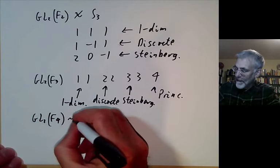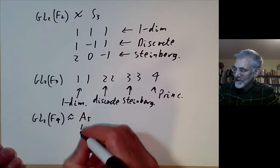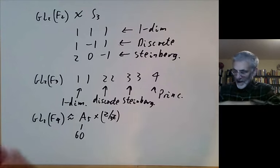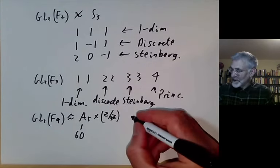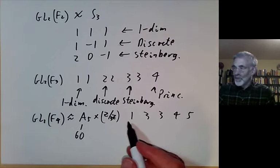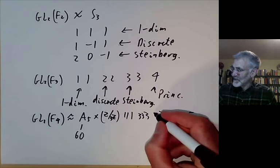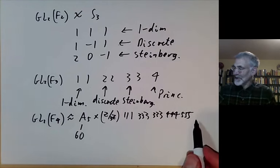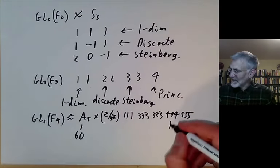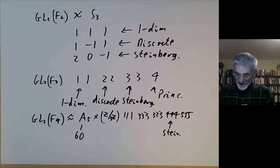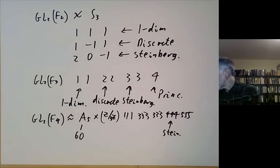For GL2(F₄): SL2(F₄) is isomorphic to A₅ of order 60, but GL2 means you also multiply by ℤ/3ℤ. So you take the representations of A₅ — dimensions 1, 3, 3, 4, 5 — and multiply all of them by three, giving three copies of each. The dimensions of GL2(F₄) representations are thus three copies each of 1, 3, 3, 4, and 5. The Steinberg representations, principal series, and discrete series can be identified among these accordingly.